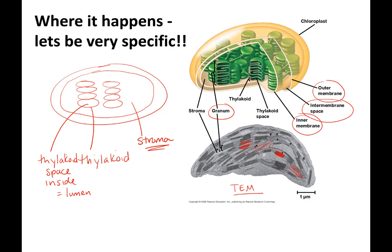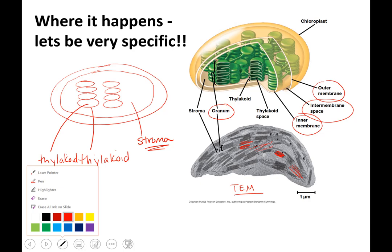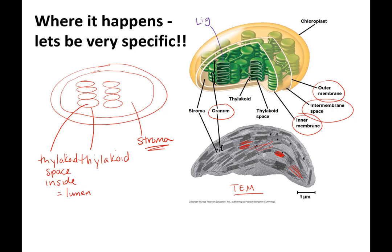Outside of the thylakoid we call the stroma — please don't get stroma and stomata mixed up. What you're going to learn through this lecture is that the light reactions happen on the thylakoid, and the space here is where what used to be called the dark reactions — now called the Calvin cycle — takes place. So the Calvin cycle is in the stroma, and the light reactions are in the thylakoid.